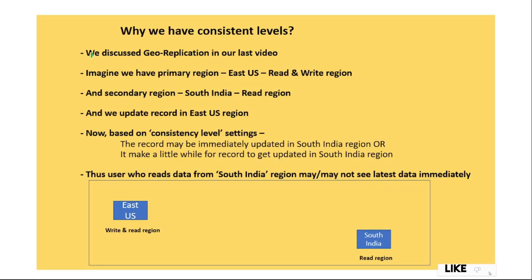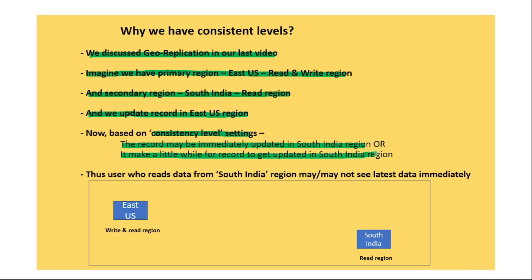If you remember, we already discussed geo-replication in our last video. Imagine we have a primary region, East US, which is a read and write region, and a secondary region, South India, which is just a read region. When we update a record in East US, based on the consistency level settings, the record may be immediately updated in the secondary region or it may take a little while. Thus, the user reading from South India may or may not see the latest data immediately.